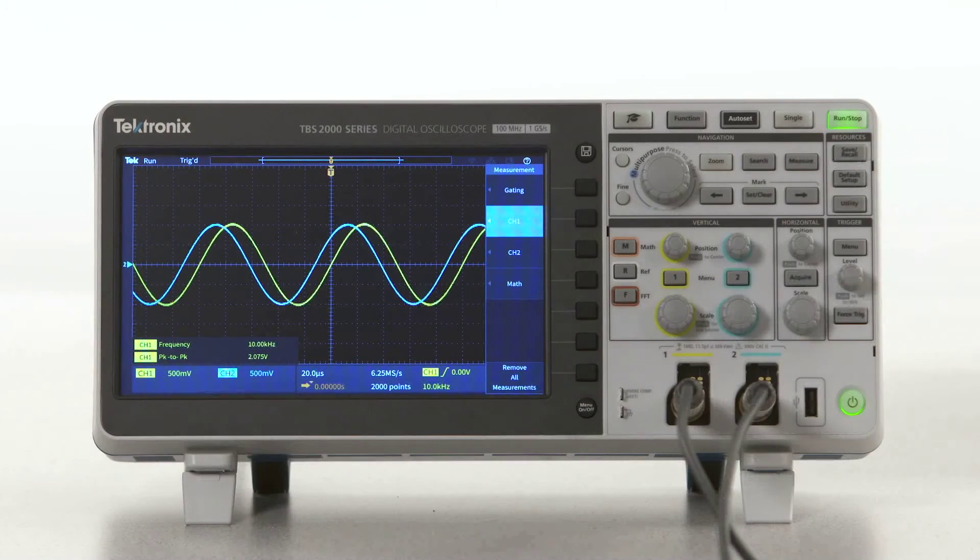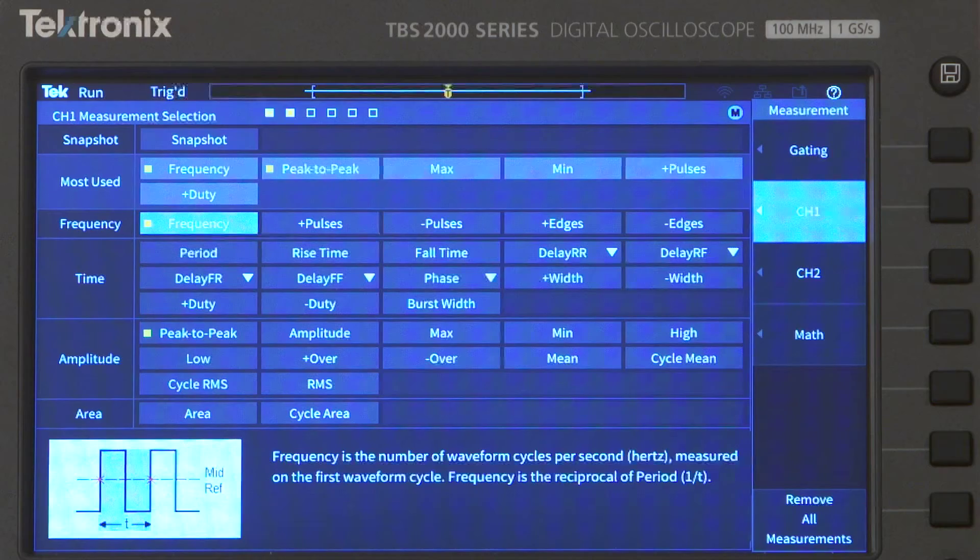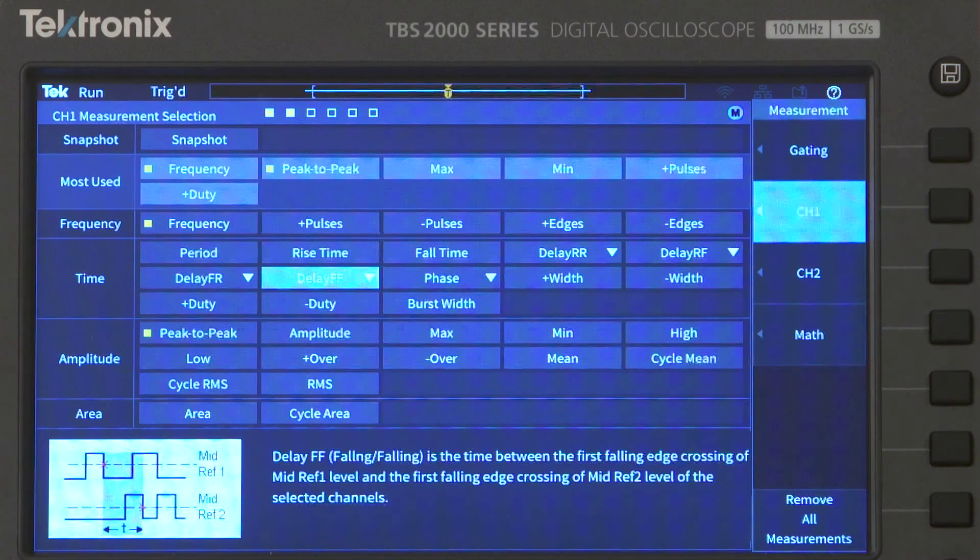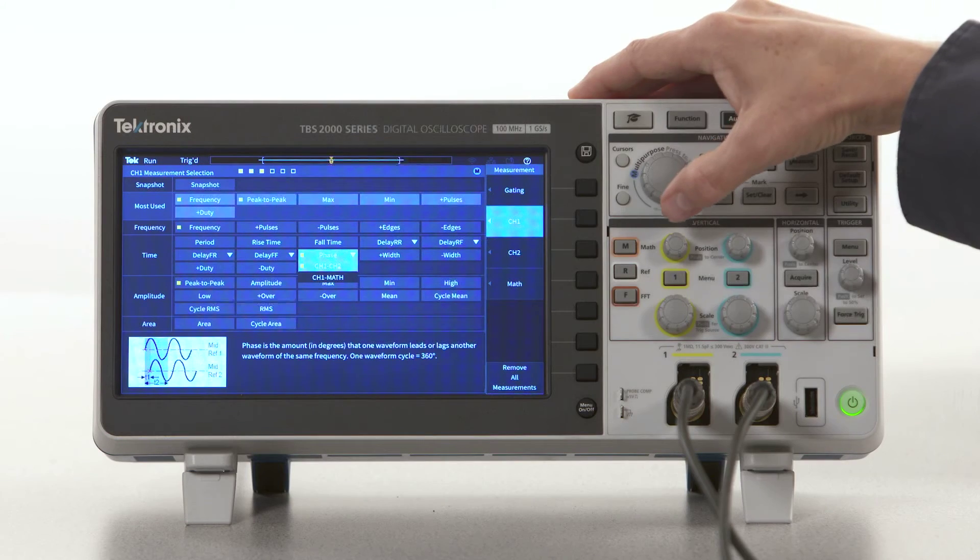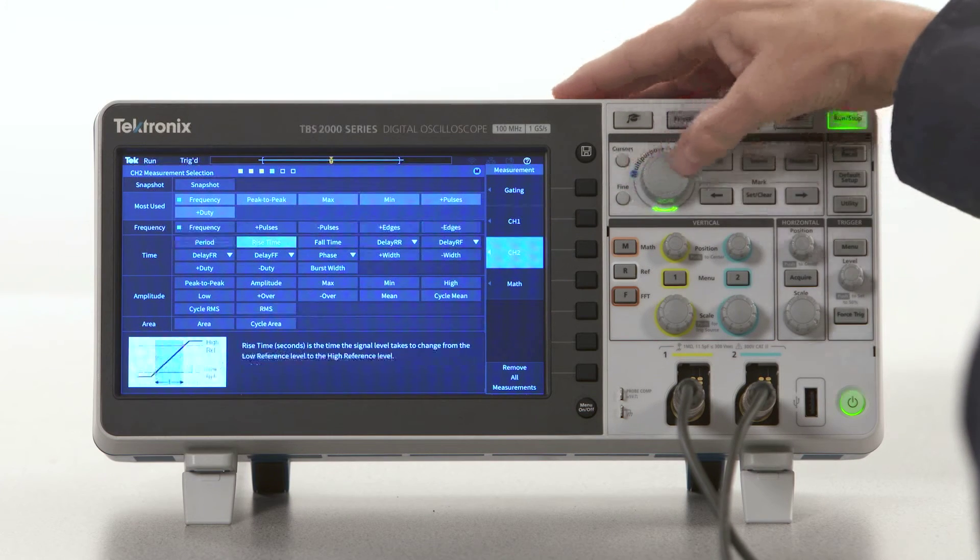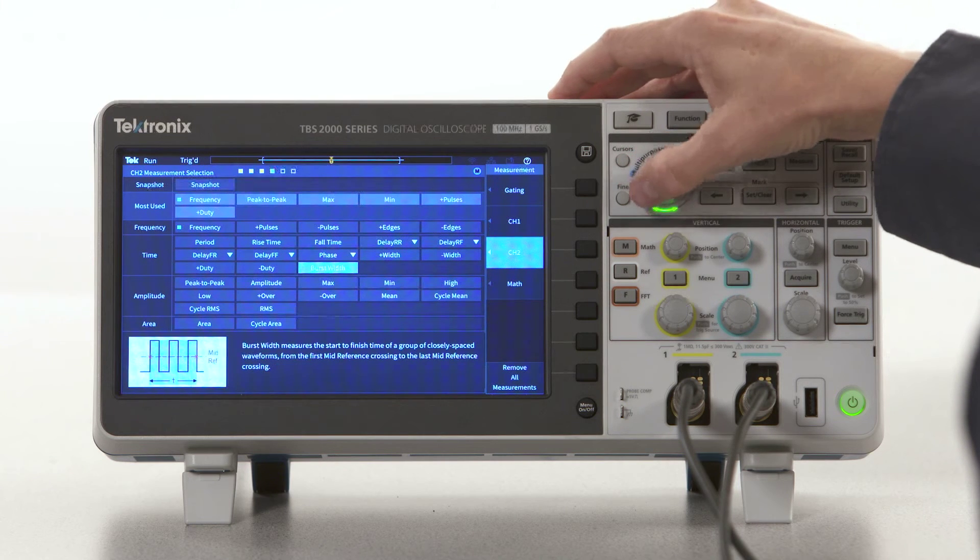Some measurements involve more than one channel, phase or delay measurements for example. For these measurements, you have to specify which channel to use. The first channel you specify is usually the reference. Let's add a phase measurement from channel 1 to channel 2. Let's also turn on frequency and peak-to-peak measurements for the signal on channel 2.